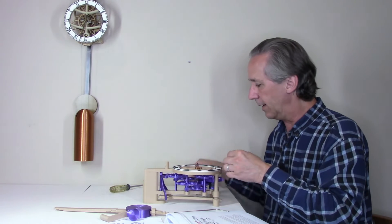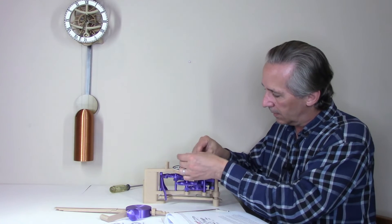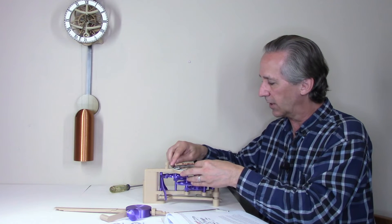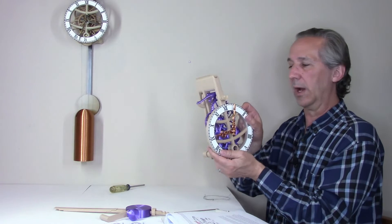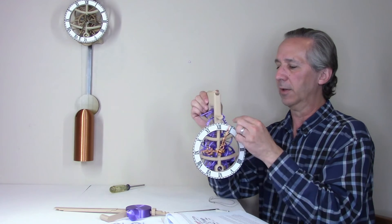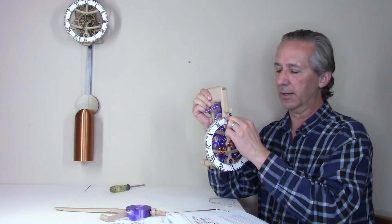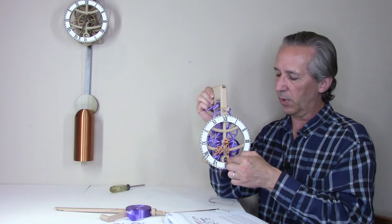Then you can go ahead and add the hands. Make sure you can test the friction clutch. What I want to test for right now is that if I rotate the minute hand, the hour hand moves with it at a one twelfth ratio.